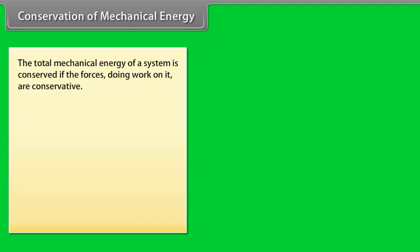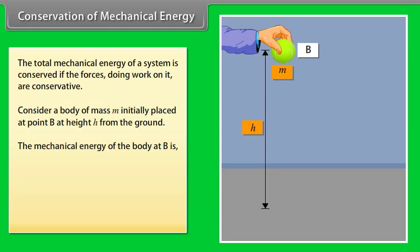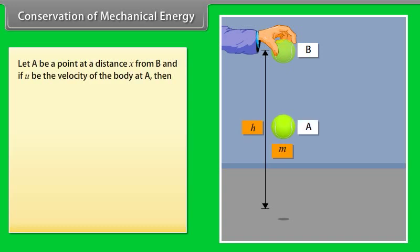Conservation of mechanical energy. The principle of conservation of total mechanical energy states that the total mechanical energy of a system is conserved if the forces doing work on it are conservative. Let us understand it with an example. Consider a body of mass m initially placed at point B at height h from the ground. The mechanical energy of the body at B is mechanical energy of the body at B = kinetic energy of the body at B plus potential energy of a body at B = zero plus mgh = mgh.